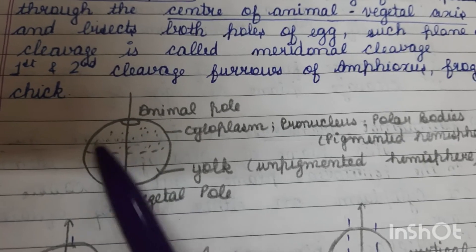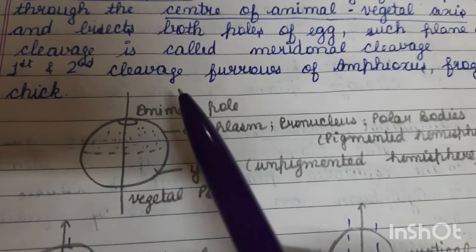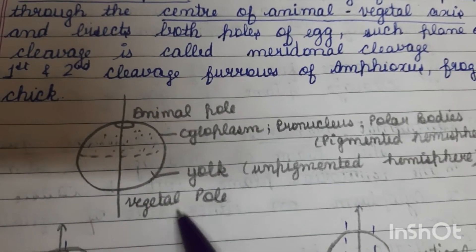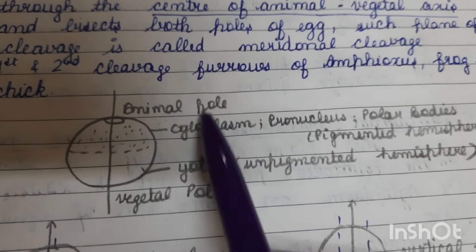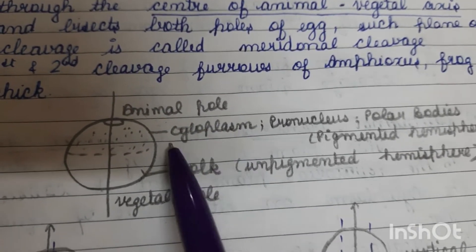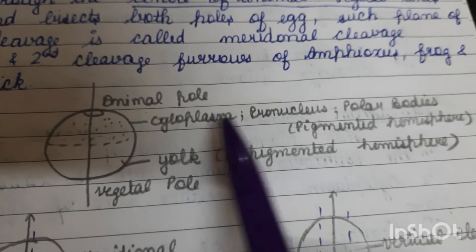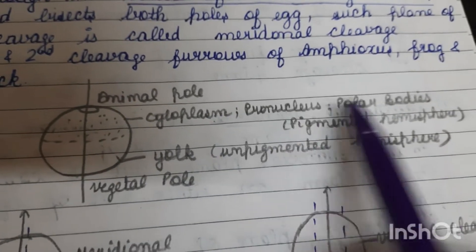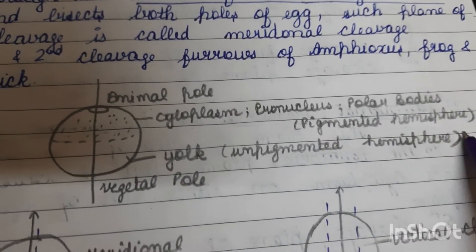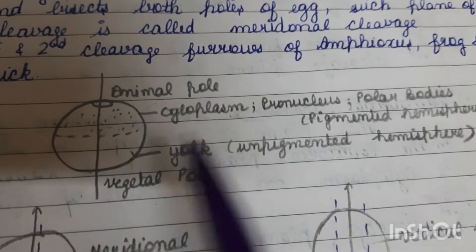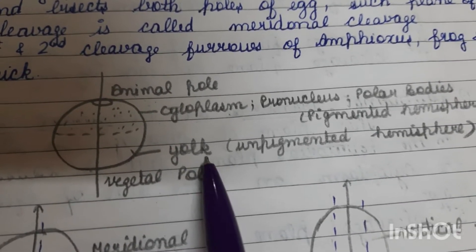Suppose this is a zygote — its two poles are the animal pole and the vegetal pole. The animal pole is on the side where cytoplasm is more, where the pronucleus and polar bodies are present, and the pigmented hemisphere is found. The vegetal pole is on the side where yolk is present and the unpigmented hemisphere will be.